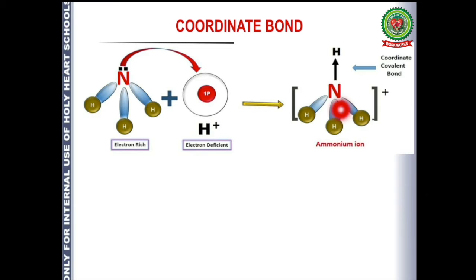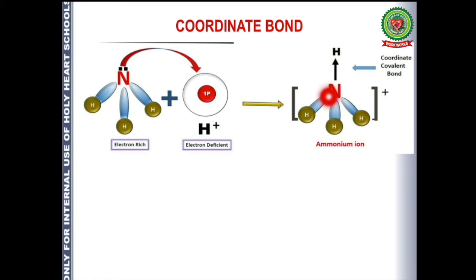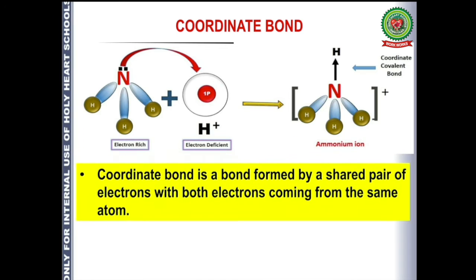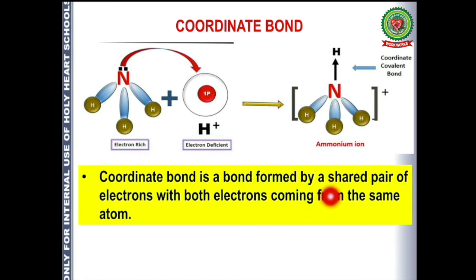Here, nitrogen has donated its lone pair to electron deficient hydrogen. Therefore, a bond formed in this case is known as a coordinate bond, because the electrons are shared between the atoms but the shared electrons are provided by one of the atoms. Coordinate bond is defined as a bond formed by a shared pair of electrons with both electrons coming from the same atom.